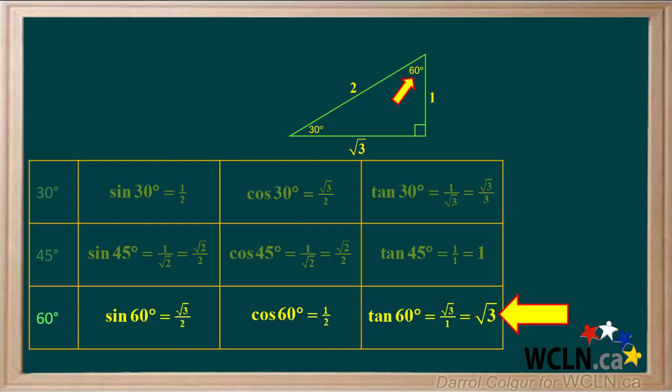And we can get the exact sine, cosine, and tangent of 60 degrees. Again, see how each of these are obtained from the diagram.